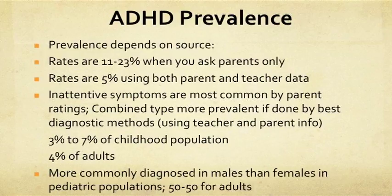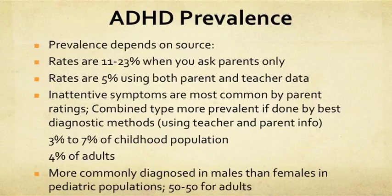In terms of prevalence, the rates depend on the source. Rates have been listed as 11% to 23% if you ask parents only, but around 5% to 7% using both parent and teacher data. Inattentive symptoms are most common by parent ratings, while the combined type is more prevalent using the best diagnostic methods — that is, using both teacher and parent data.